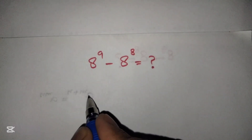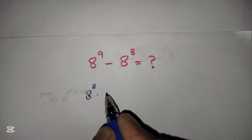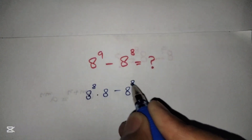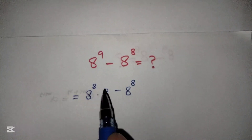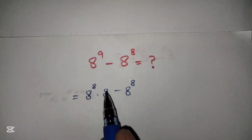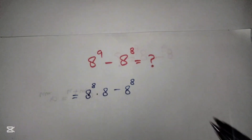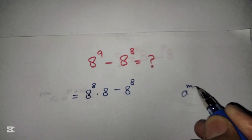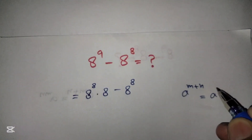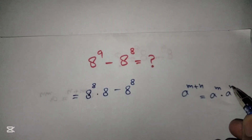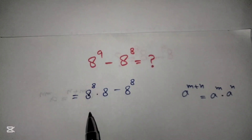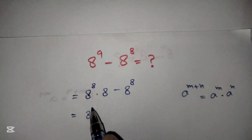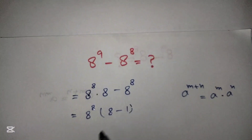First, we will write this as 8 raised to power 8 into 8, minus 8 raised to power 8. Here we break 8 raised to power 9 into 8 raised to power 8 multiplied by 8 raised to power 1, using the exponential identity: a raised to power m+n equals a raised to power m into a raised to power n. Now we can see that 8 raised to power 8 is common from both terms, so taking it common we get 8 raised to power 8 into (8 minus 1), which is 8 raised to power 8 into 7.